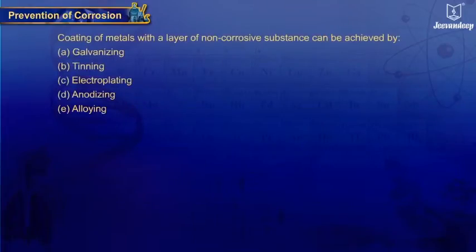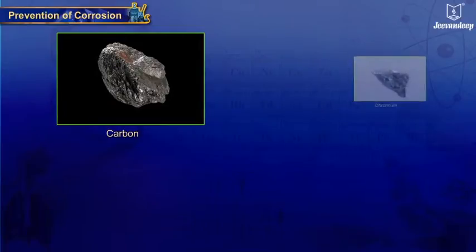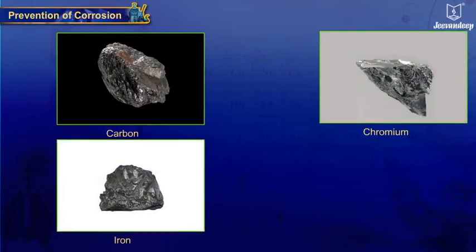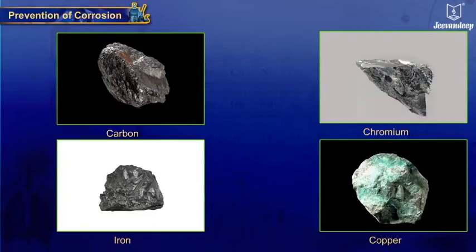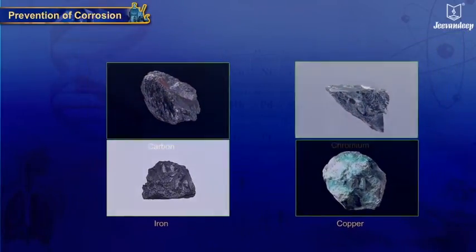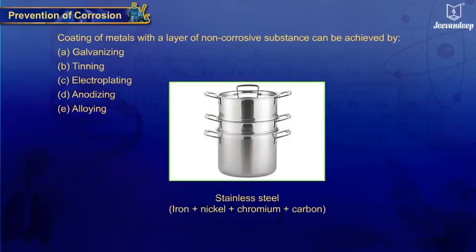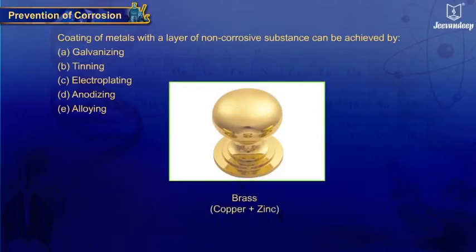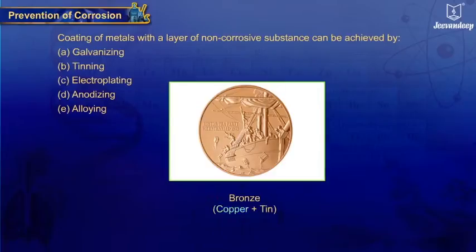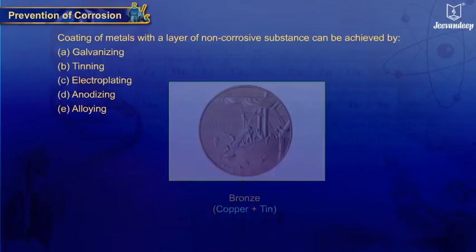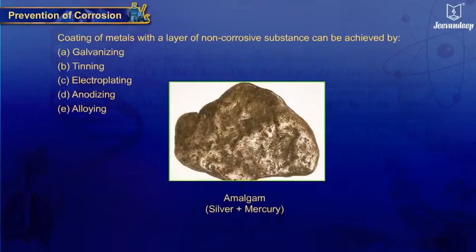(e) Alloying - an alloy is a homogeneous mixture of two or more metals, or a metal and a non-metal in definite proportion, which is resistant towards corrosion. Examples: stainless steel (mixture of iron, nickel, chromium, carbon), brass (mixture of copper and zinc), bronze (mixture of copper and tin). If one of the metals of the alloy is mercury, the alloy is known as amalgam.